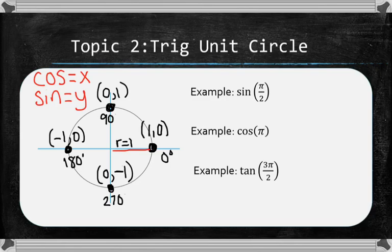So, sine of π over 2. Well, first what's π over 2? π is 180. So 180 over 2 is 90 degrees. So this is sine of 90. You go up to 90 degrees up here. And you look at the sine coordinate, meaning the y coordinate. So that would be the 1. So this is going to be 1 here.